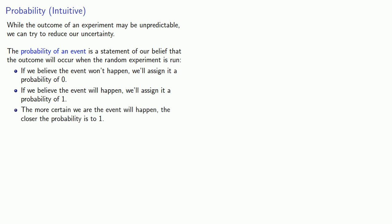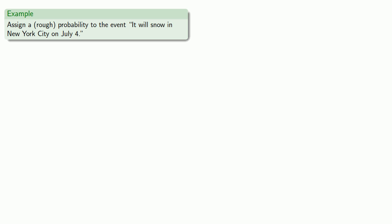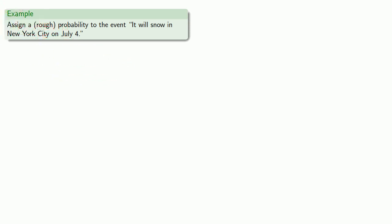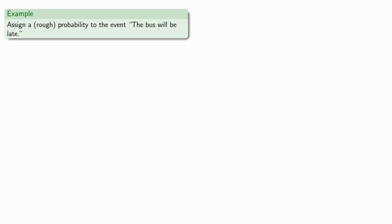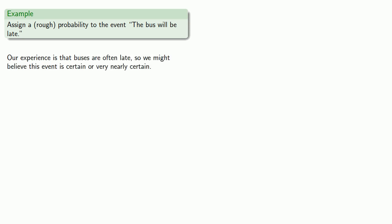The more certain we are that the event will happen, the closer the probability is to one. Likewise, the more certain we are that the event won't happen, the closer the probability is to zero. For example, we might assign a rough probability to the event 'it will snow in New York City on July 4th' — most of us would be pretty certain this won't occur, so we assign it a probability near zero. Or for the event 'the bus will be late' — our experience is that buses are very often late, so we might believe this event is very nearly certain and assign it a probability near one.